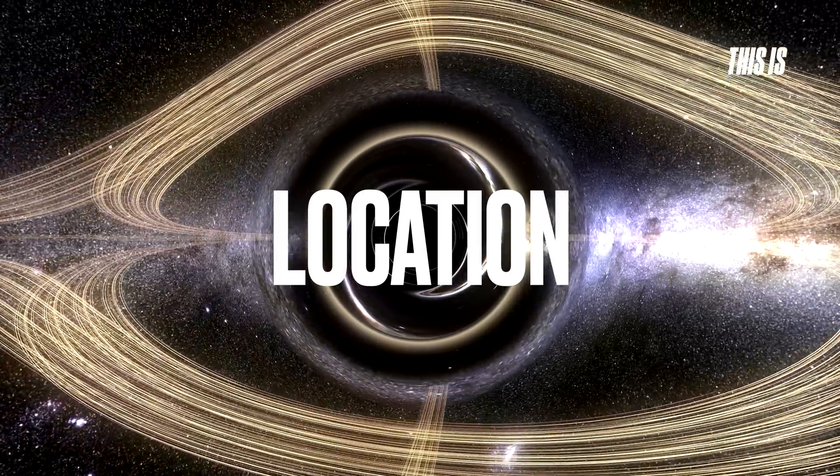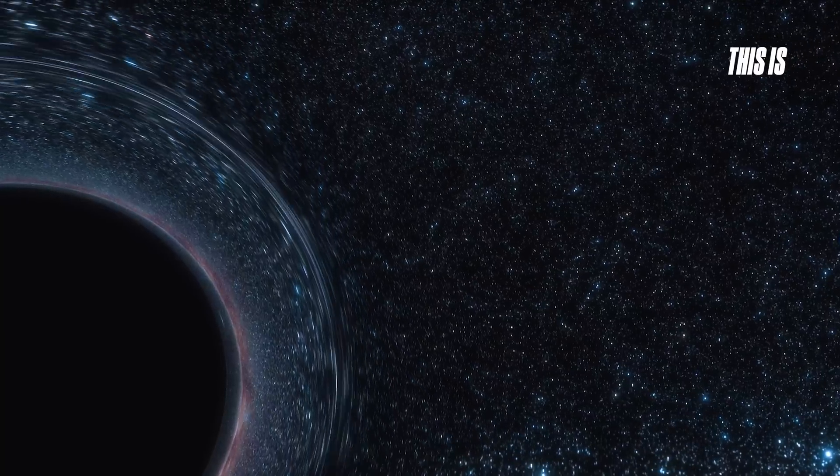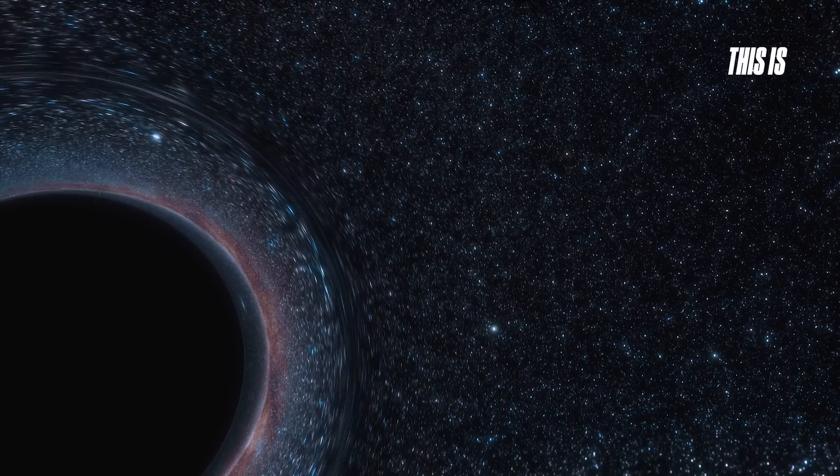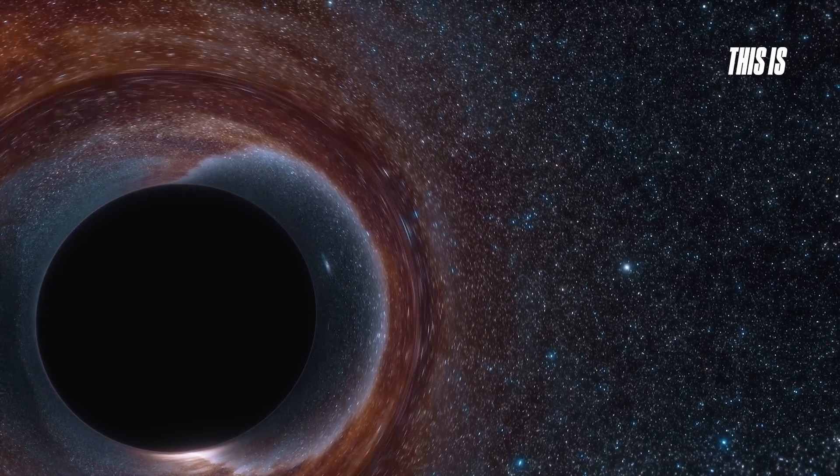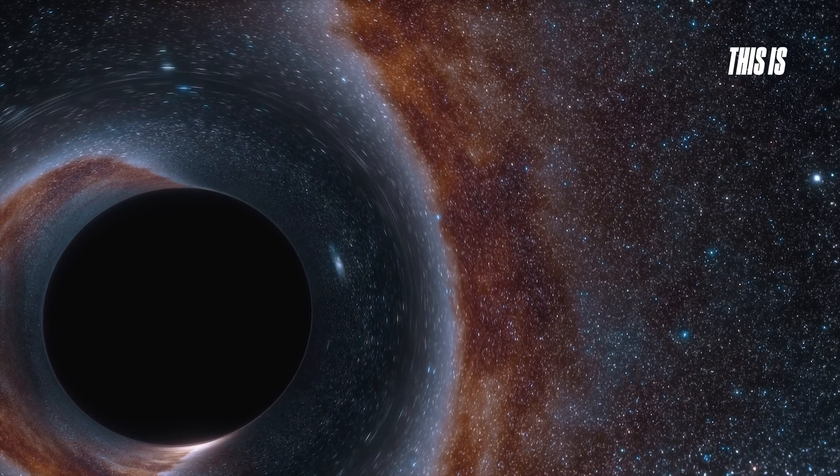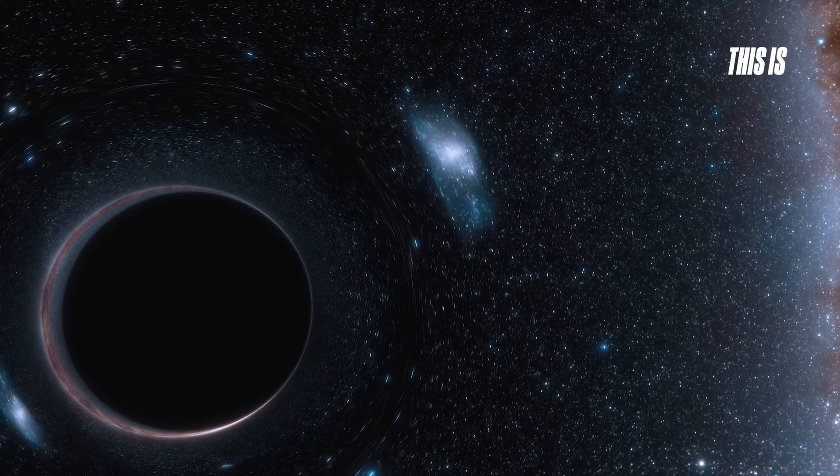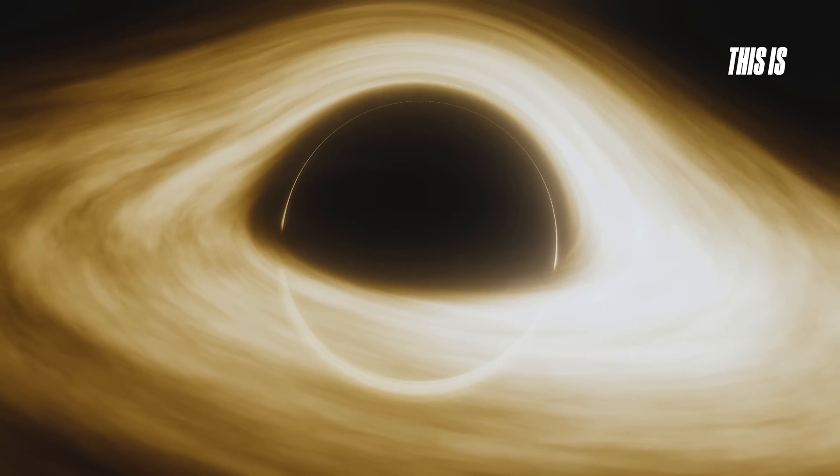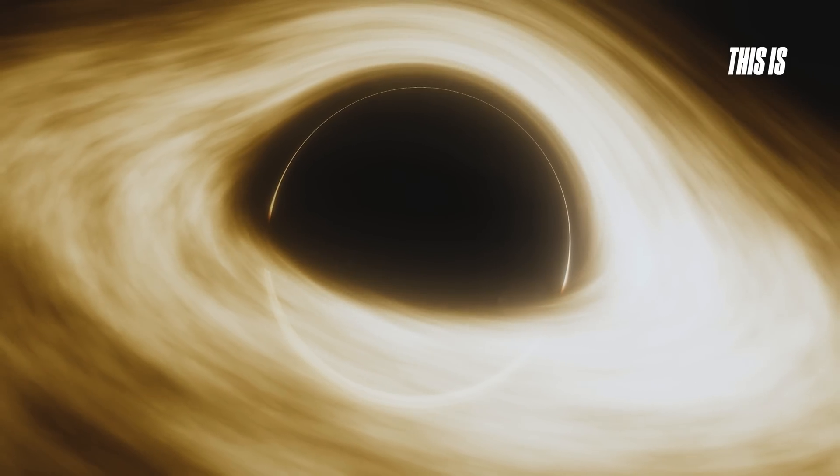Black holes do not have fixed locations; they move through space just like stars and galaxies. If they form from a collapsing star, their motion depends on the velocity of the original star. Supermassive black holes, however, are typically found at the centers of galaxies, where they remain relatively stable due to the immense gravitational influence of the galaxy itself. Smaller and even supermassive black holes can also be ejected from galaxies, drifting alone through the cosmos.